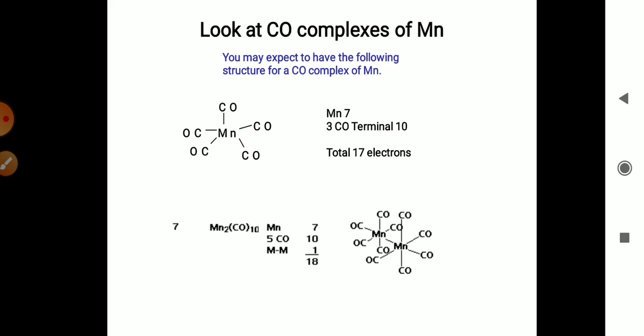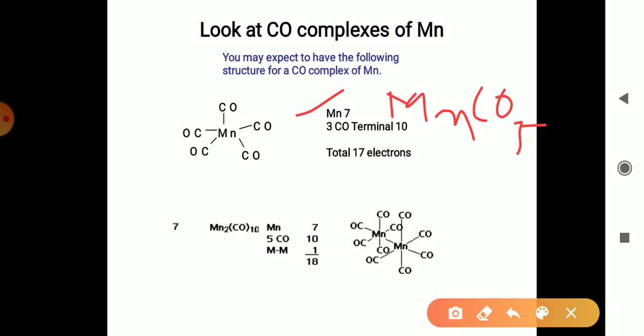Another example like Mn(CO)5. In this, you can see that Mn has 7 electrons, and the carbonyl compound gives 10 electrons, and the total is 17. This will not obey the 18 electrons.